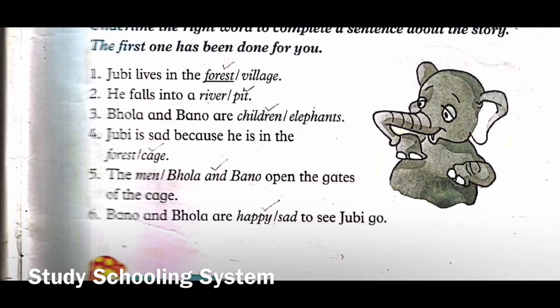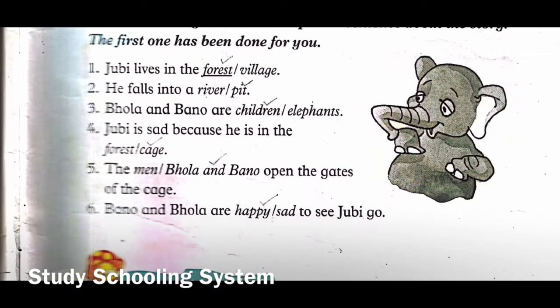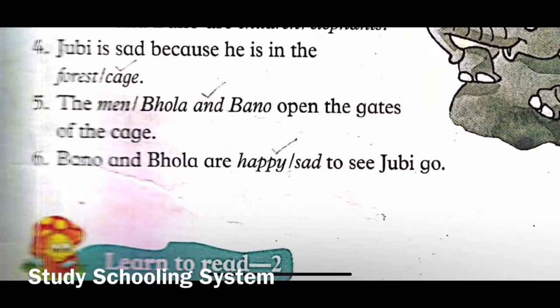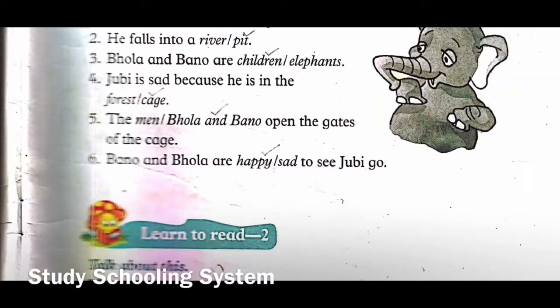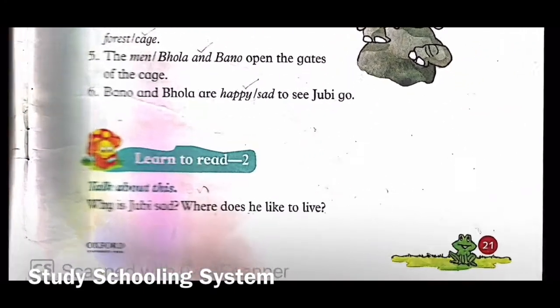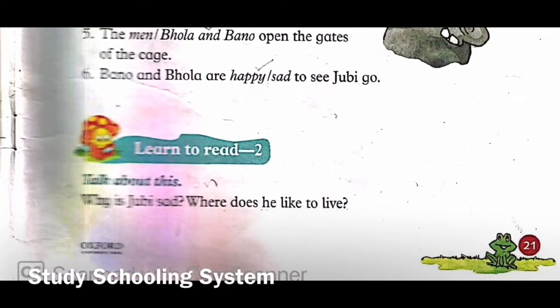Number five: the men slash Bholla and Bano open the gates of the cage - who opened the gates? Bholla and Bano, not the men. The men captured him, so the correct answer is Bholla and Bano. Number six: Bano and Bholla are happy slash sad to see Jubi go - yes, they were happy to open the gates and let Jubi go, so underline 'happy.' Good job!